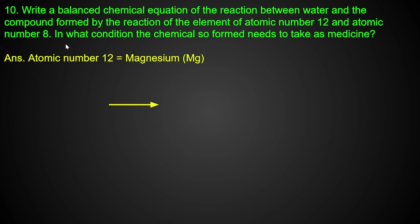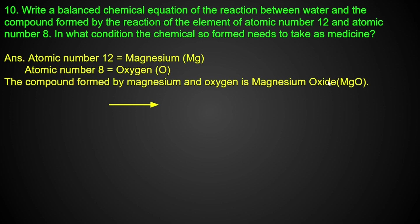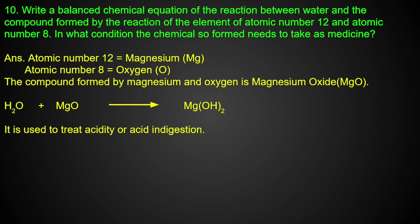Atomic number 12 is magnesium and atomic number 8 is oxygen. Magnesium and oxygen combine to form magnesium oxide (MgO). The reaction of CaO plus H2O is also noted. Magnesium oxide is used to treat acidity.